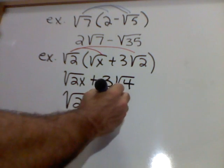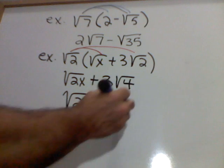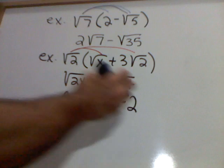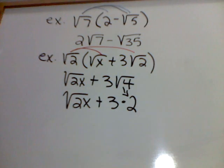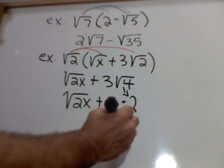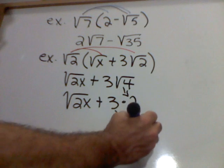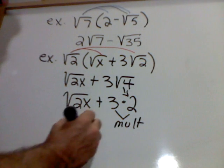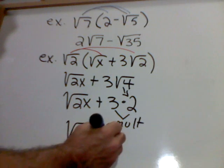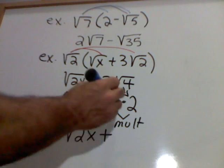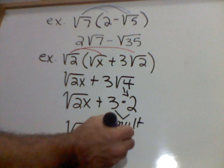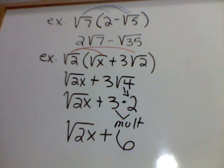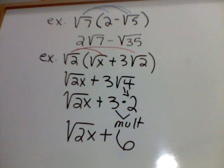but this 3 is going to get multiplied by 2 since the square root of 4 is 2. Now, last step is to multiply. So, square root of 2x stays the same, but now I got 3 times 2 which is 6. Unlike terms, so final answer.